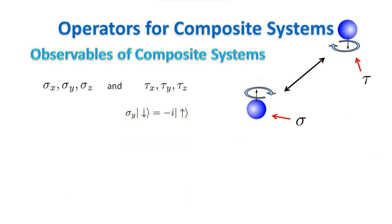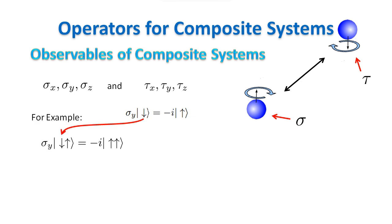Now we can use what we just learned on operator representation to work out the operators for the composite system. We will call sigma the operators acting on the first particle, and tau the operators acting on the second particle. Since we know how an operator acts on a vector basis of a particle, we know also how it acts on a vector basis of the composite system. It does the same thing to that particle and leaves the other particle unchanged.